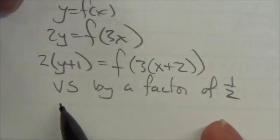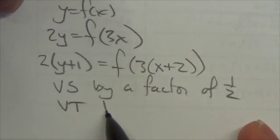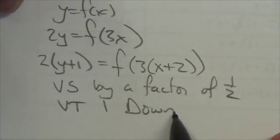Then I would subtract 1 from both sides. So that's going to be a vertical translation, 1 down.